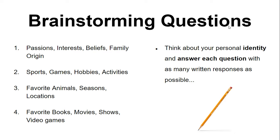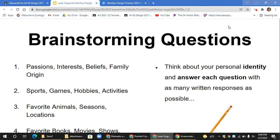The second question is other kinds of passions and interests, such as sports, games, hobbies, or other activities you enjoy doing. Three is your favorite animals, seasons, and locations. Four is your favorite books, movies, shows, video games, or even music. So you want to think about your personal identity and answer each question with as many written responses as possible.